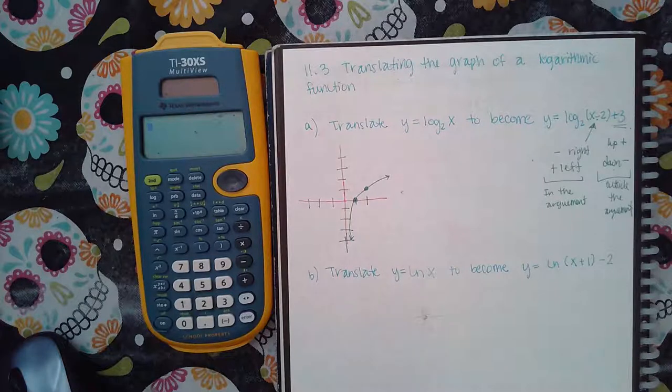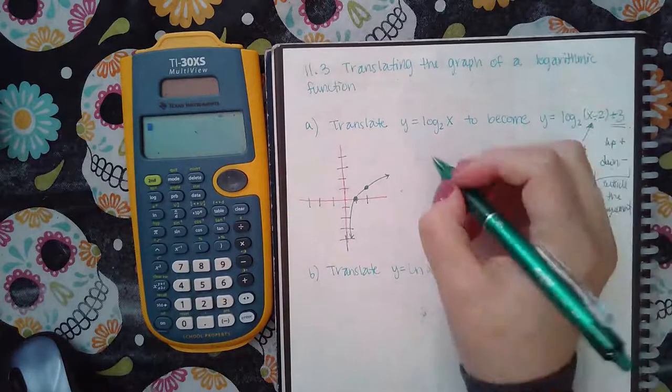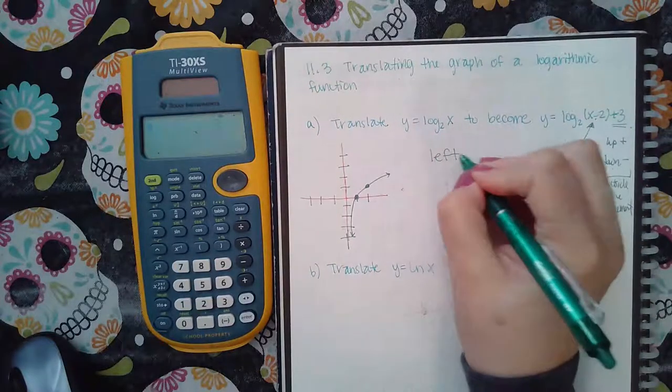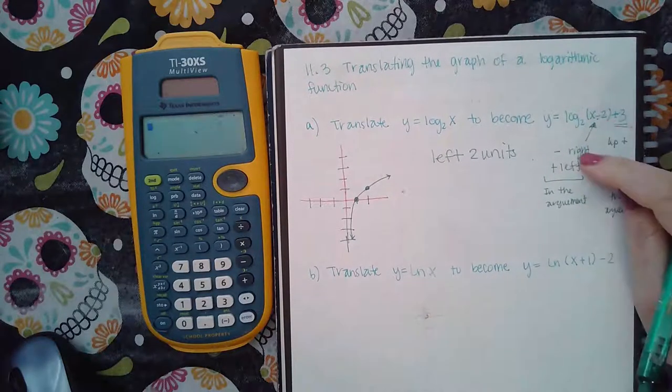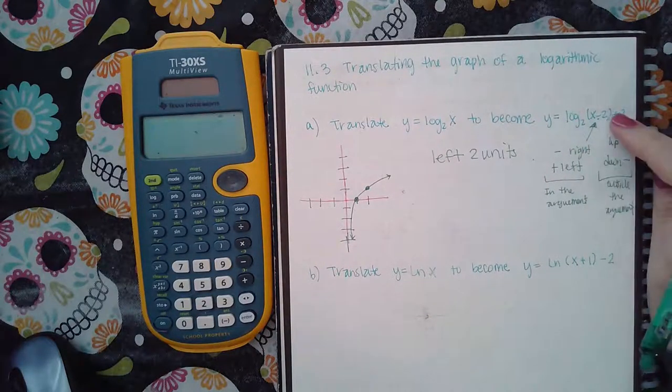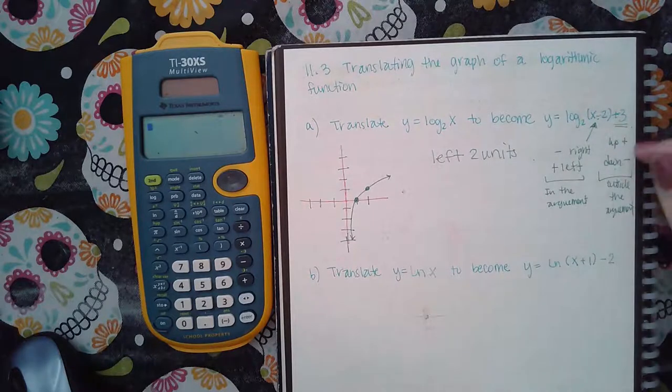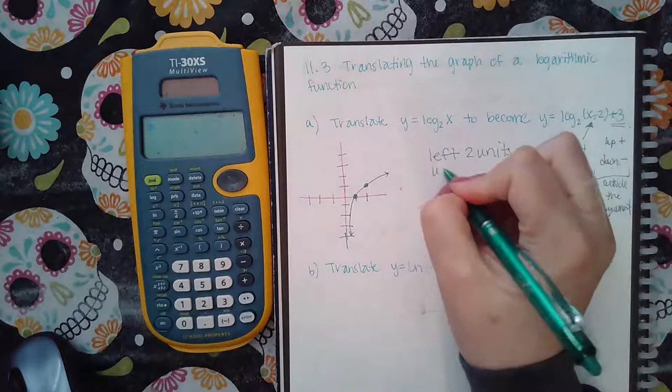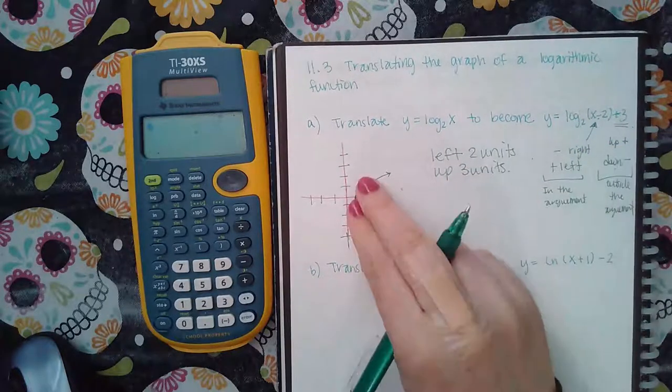So mine I have a minus which means I would have to grab my graph and move it right two units because I'm minusing two. Then since I'm adding three outside of the argument that means I'm going to be going up three units.